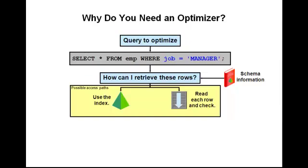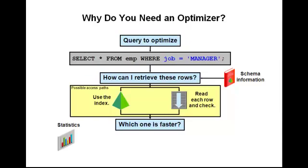The optimizer generates a set of potential plans for the SQL statement based on the available access paths. Once the optimizer knows the possible plans, it needs to determine which one is faster. Based on object statistics, the optimizer can determine how many rows correspond to the managers and weigh the cost of each possible plan found.